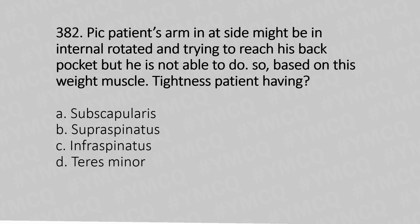Question 382: A patient's arm is at the side, internally rotated, and he is trying to reach his back pocket but is not able to do so. Based on this, which muscle tightness is the patient having? Option A: subscapularis. Option B: supraspinatus. Option C: infraspinatus. Option D: teres minor.